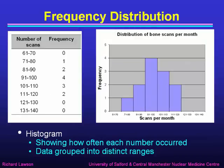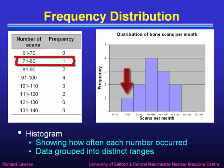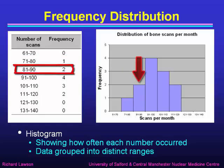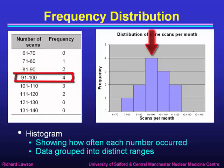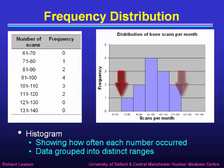The frequency distribution is something we should be talking about a lot. This is another version of a histogram which shows how often each number occurred. To plot this we have to group the data into distinct ranges. For example, the number of times we did between 71 and 80 bone scans in a month was only one, but on two months we did between 81 and 90 bone scans, and in four months we did between 91 and 100. So the distribution here shows the distribution of bone scans each month from the smallest to the largest number, and gives us at a glance an overall view of the distribution rather than just a single number.